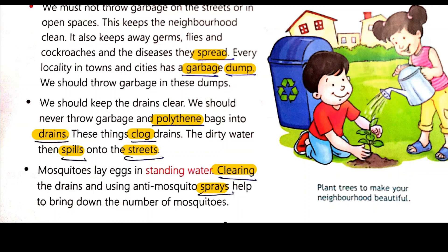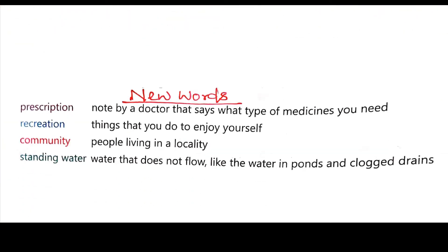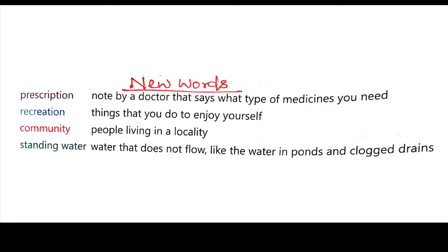Parks, libraries, gyms, clubs, cinemas, and community centers are some places people visit for recreation. We can make our neighborhood a better place to live in by keeping it clean and helping each other. Now let's learn the meaning of some new words. First, prescription means a note by a doctor that says what type of medicines you need. Second, recreation means things that you do to enjoy yourself. Third, community means people living in our locality.